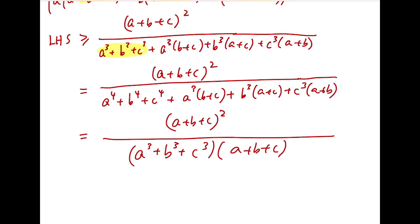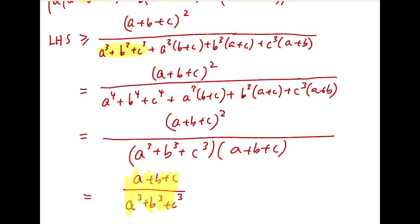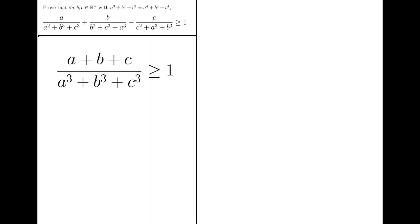So now we have some symmetry, and the left-hand side is actually greater than or equal to (A plus B plus C) over (A cubed plus B cubed plus C cubed). It remains to show that this expression is at least 1.